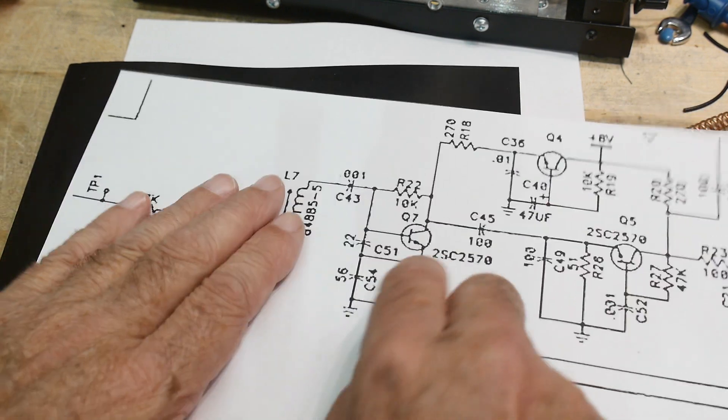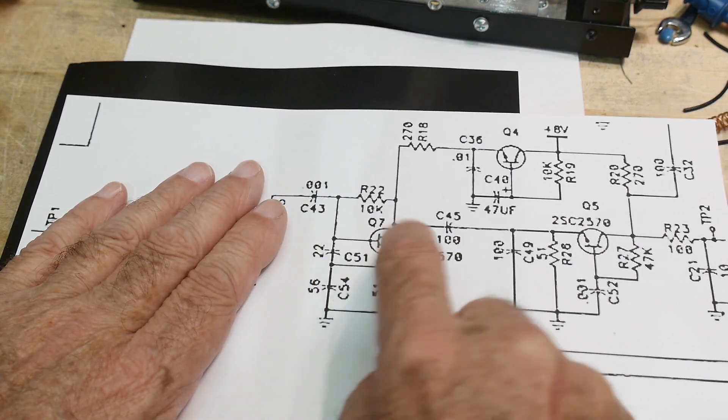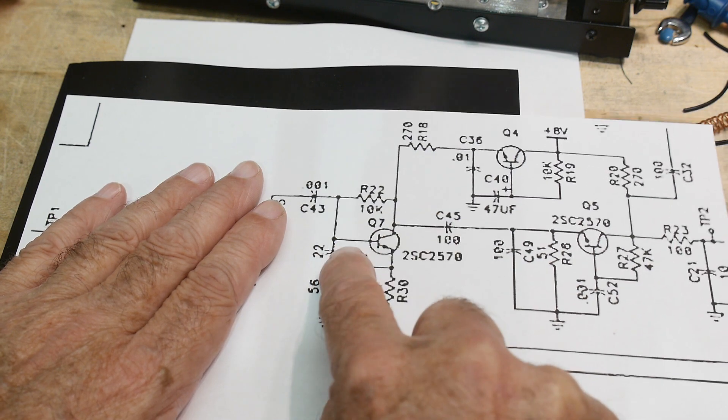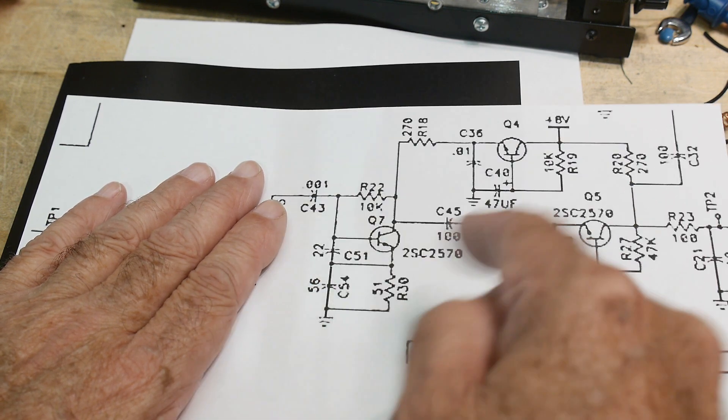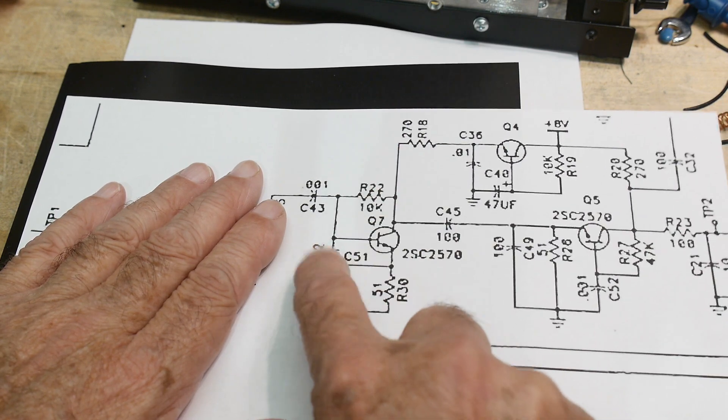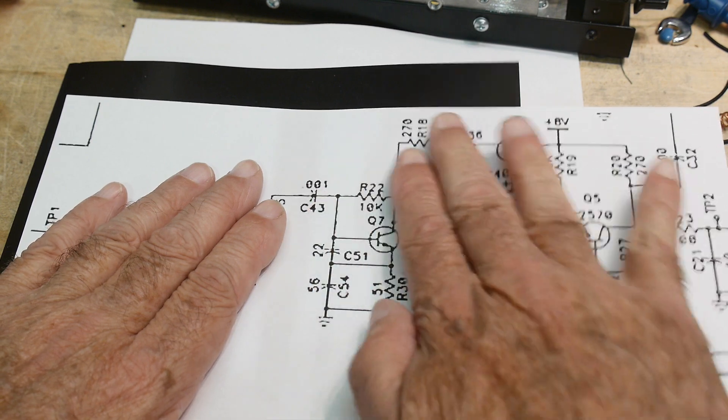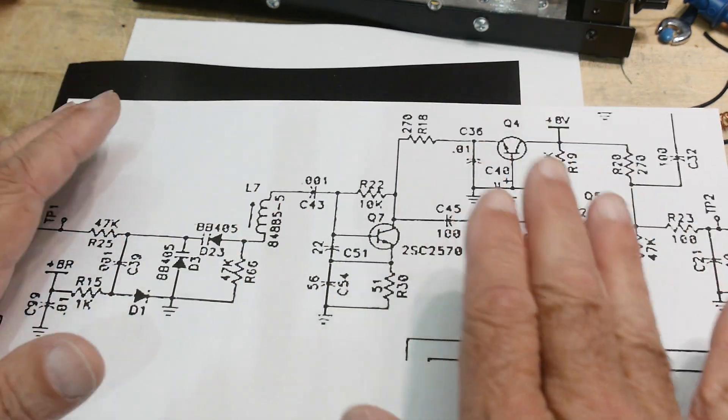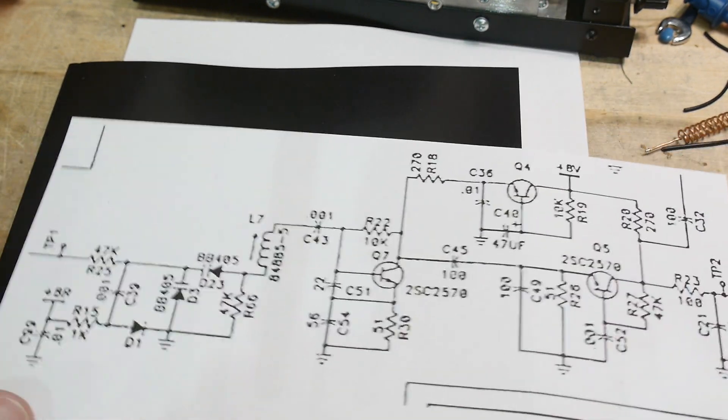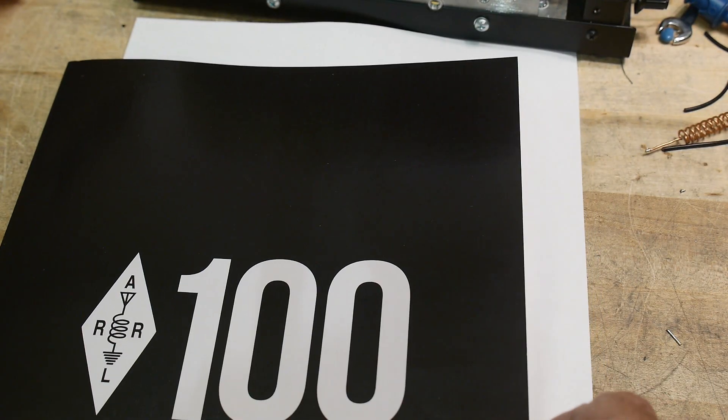But the Colpitts works by having a local feedback right here from emitter to base. That's positive feedback. When this one goes up, this one also goes up. So it's positive. And you get positive feedback. Then you have to make it only oscillate at one particular frequency. And then you add an inductor and a capacitor and stuff. So let's kind of take a look at that.